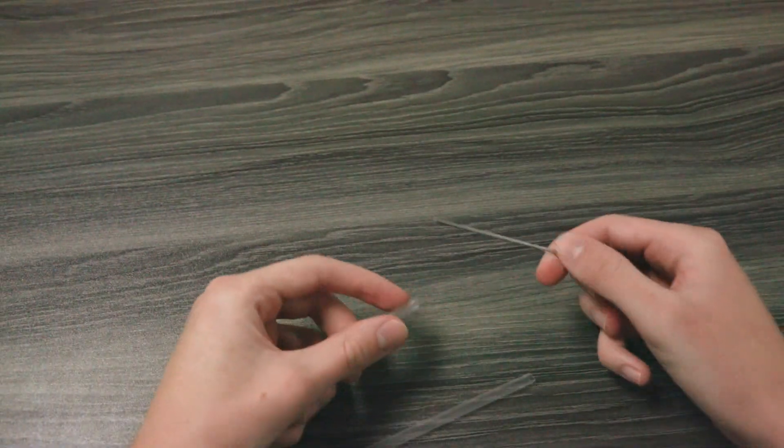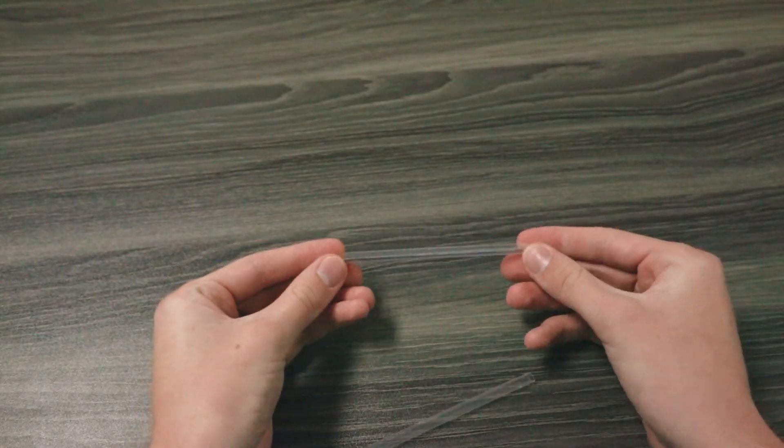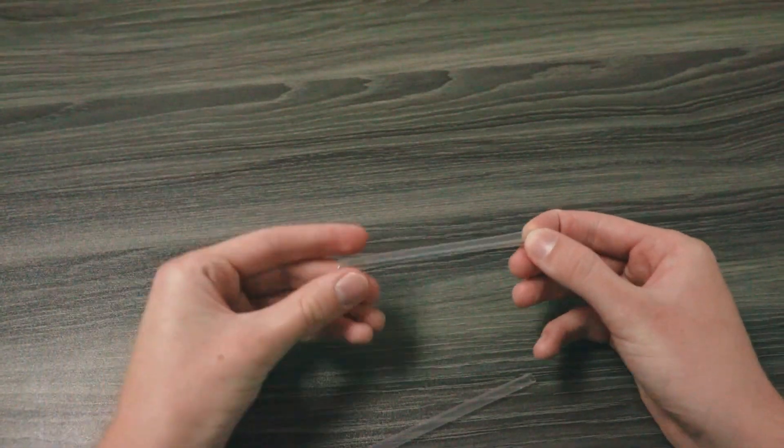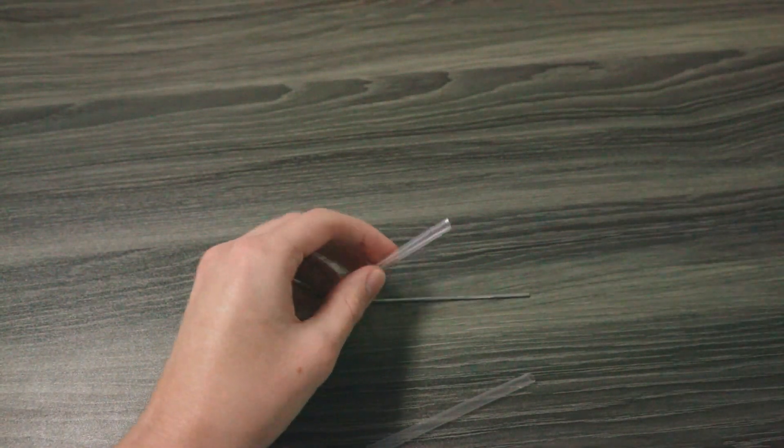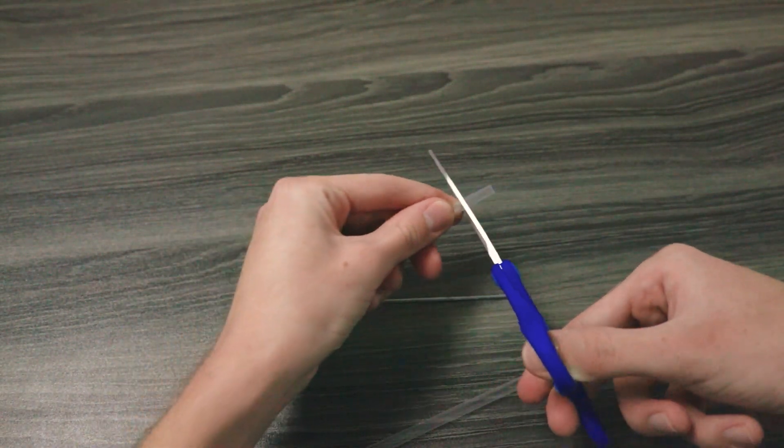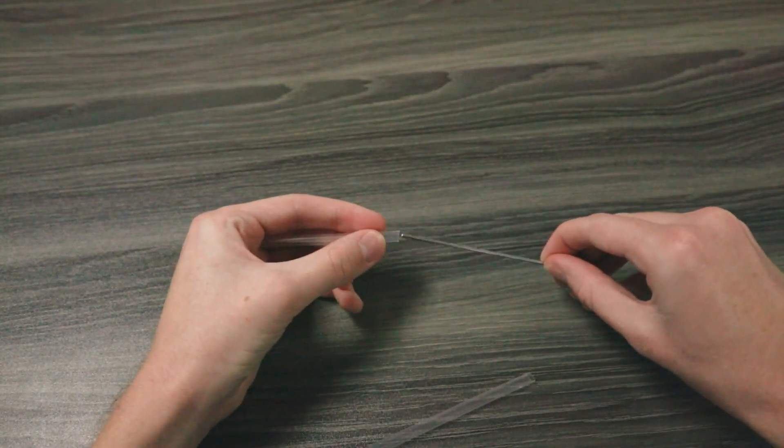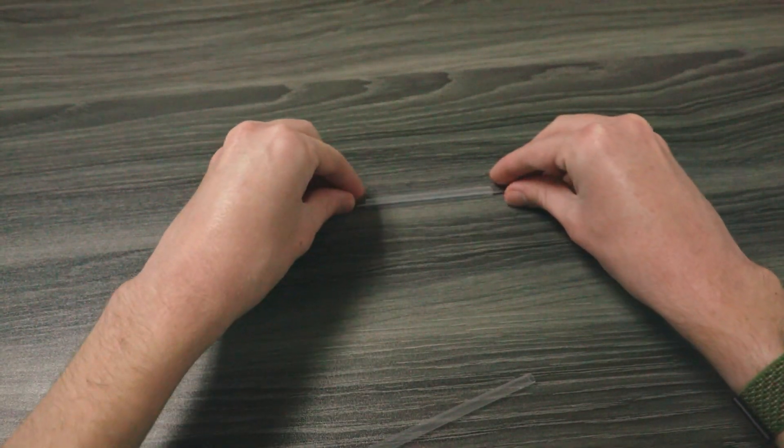Next we will take one metal rod and insert it into one of our straw halves. Make sure that you have parts of the metal rod sticking out from both ends of the straw. If you don't, as I don't here, you can shorten the straw a little bit and discard the excess.